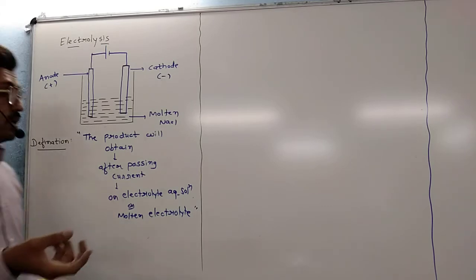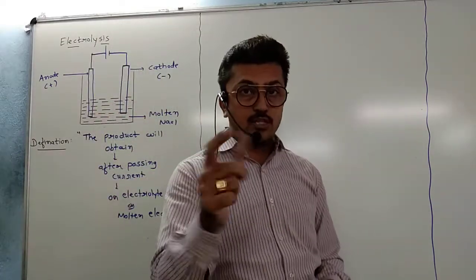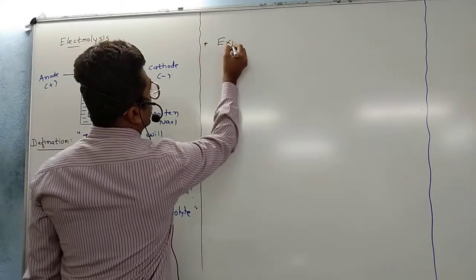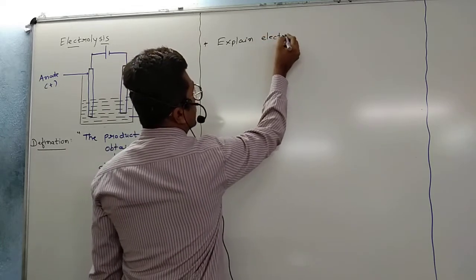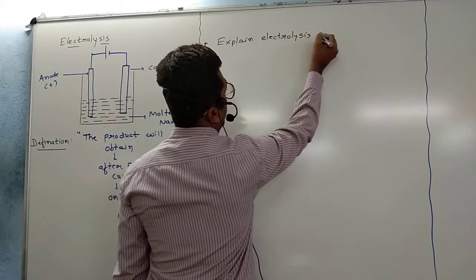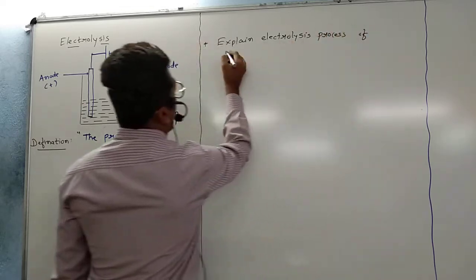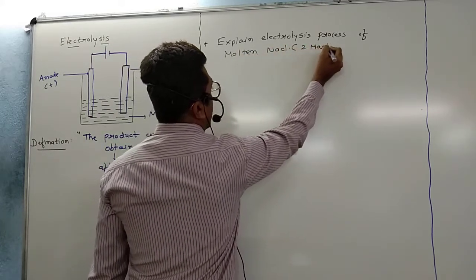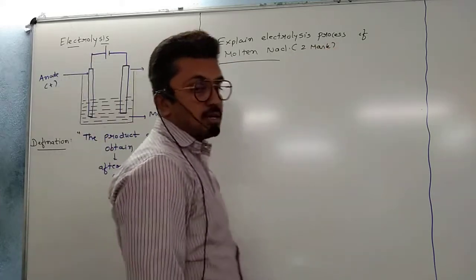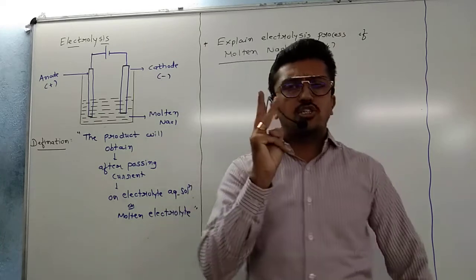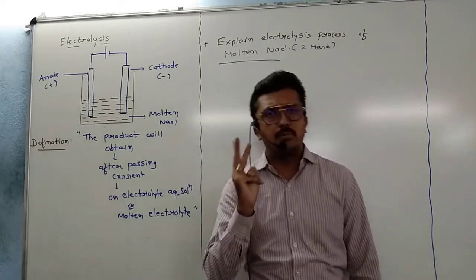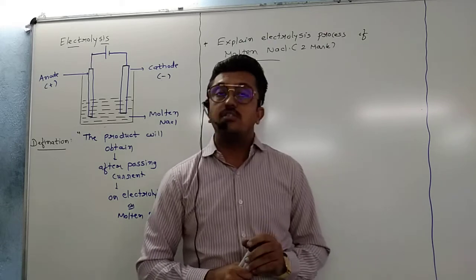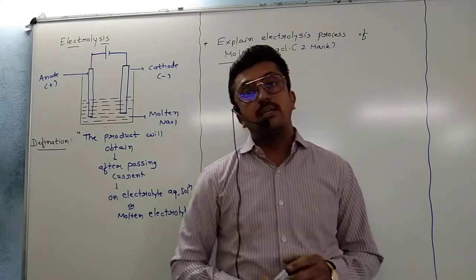Now the next question is that we will explain electrolysis with a new proper example. We will explain the electrolysis process of molten NaCl — this is a two-marks question asked in your examinations. There are three types of NaCl solution: number one is the molten solution, number two is the concentrated solution, and number three is the dilute solution.